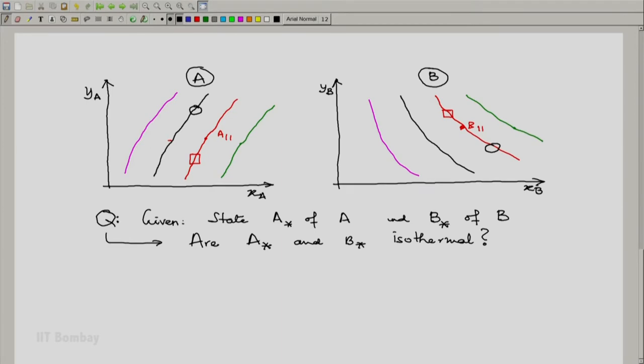And then we saw that if, for example, A star happens to be on the red isotherm and B star also happens to be on the red isotherm, then we will say these two states of the corresponding systems A and B are isothermic.